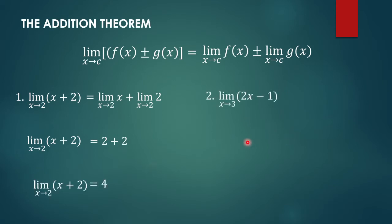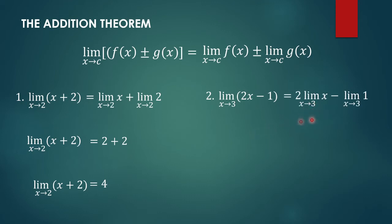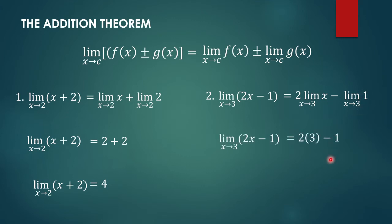Another example: the limit of 2x minus 1 as x approaches 3. Using the Constant Multiple Theorem, this can be written as 2 times the limit of x as x approaches 3 minus the limit of 1 as x approaches 3. The limit of x as x approaches 3 is 3, and the limit of the constant 1 is 1. So we have 2 times 3 minus 1, which equals 5.